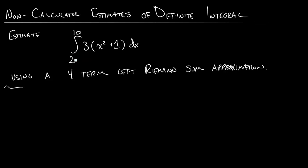So here's a cool example. We're looking at the definite integral from 2 to 10 of this function, and it tells us to use a four-term left Riemann sum approximation. What does any of that mean? It's not as fun as using the calculator, as using the FN INT, in which case we'd be done immediately.